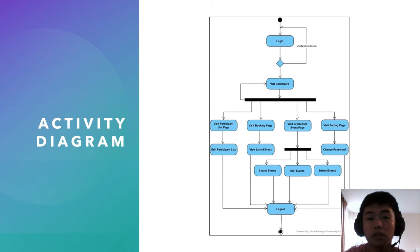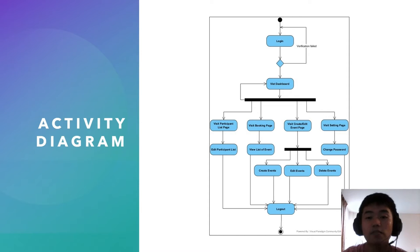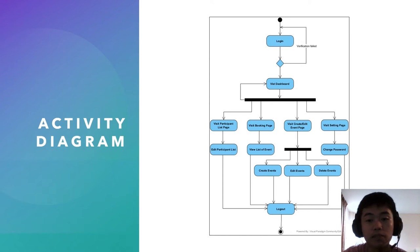For the activity diagram, the admin will need to login to the system. If verification fails, they will need to re-login. After logging in successfully, they can go to the dashboard. At the dashboard, the admin can visit the participant list page and edit participant list, or visit the booking page to view the list of events, or visit the create or edit event page to create, edit, or delete events, or visit the settings page to change password.